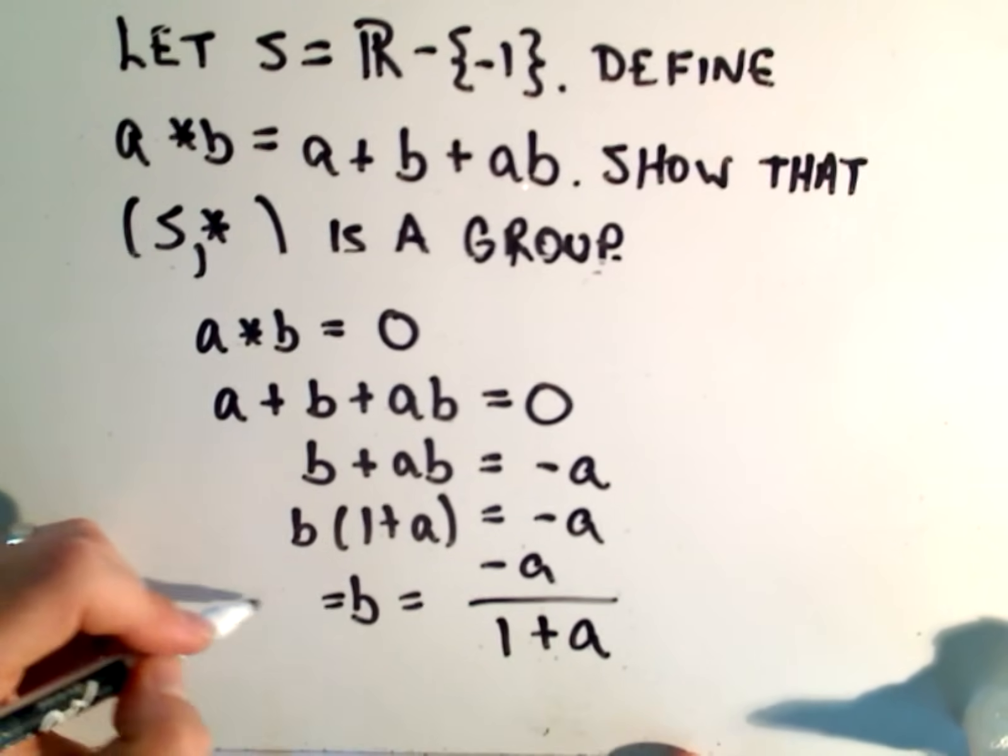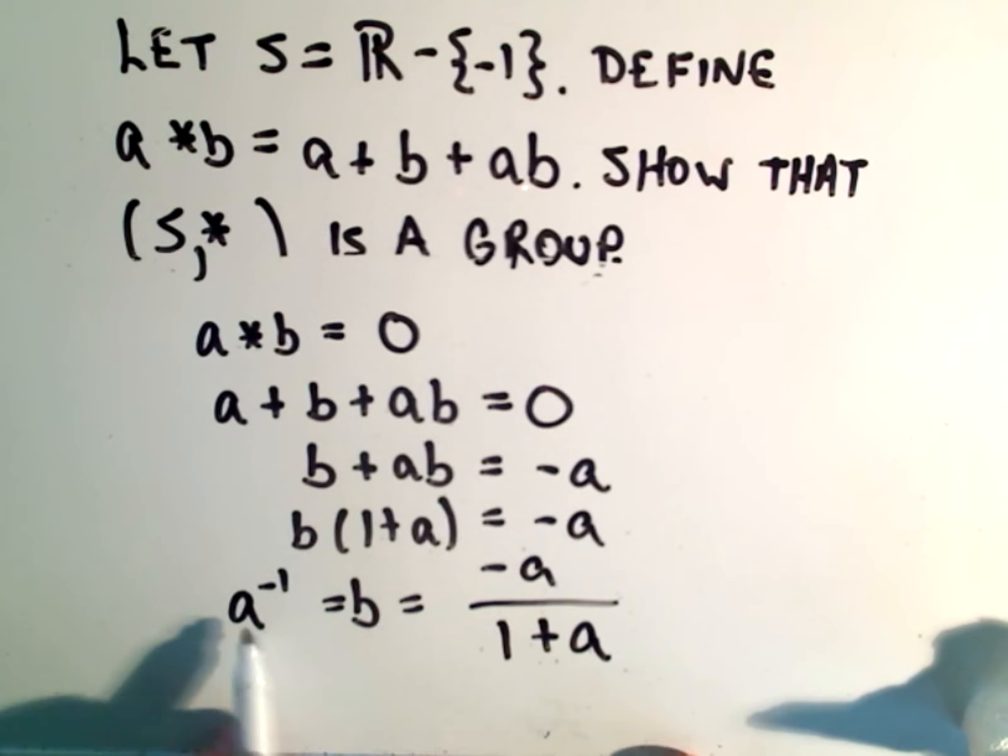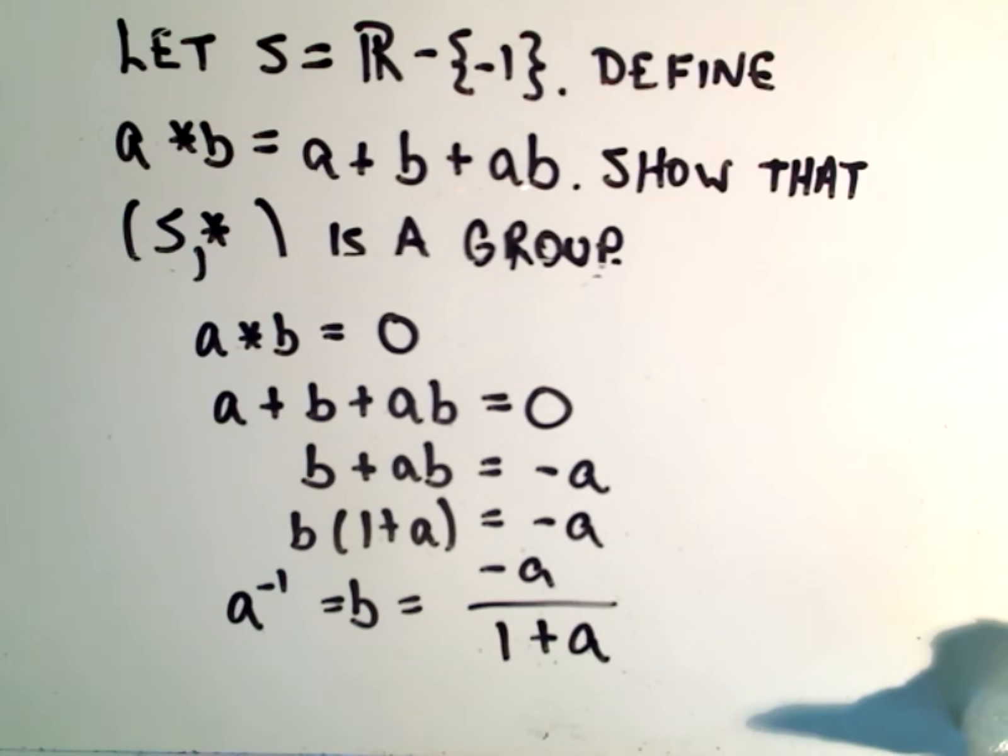So we've now solved directly for what the inverse element of a should be. We found b. Again, that's equivalent to our a inverse. It should be negative a over one plus a. Certainly, again, this is uniquely defined. Notice also it can't be negative one just because algebraically, it's not equal to negative one. The denominator is always going to be off by one compared to the numerator if you think about them in terms of absolute value.